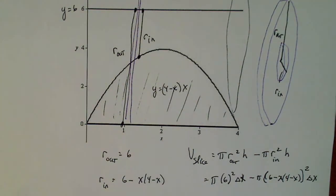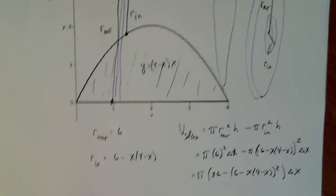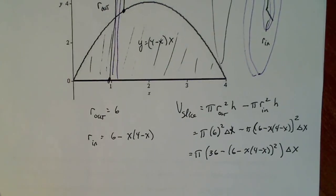Now you can simplify this if you'd like. You can factor out a π, and you're left with 36 - [6 - x(4-x)]². And then you can factor out a Δx in the end. So that's a little bit more simplified.